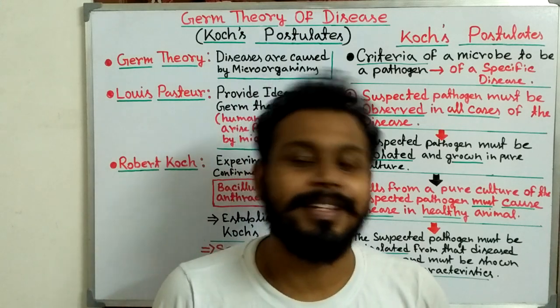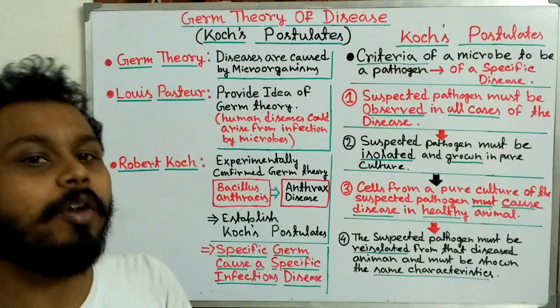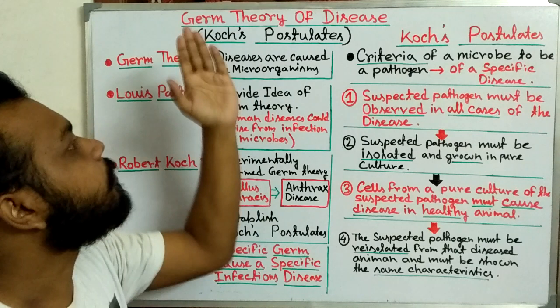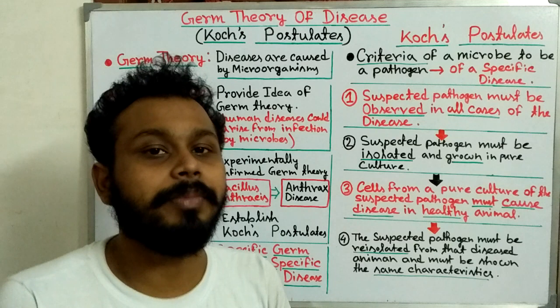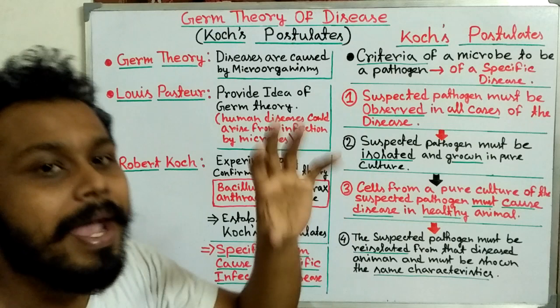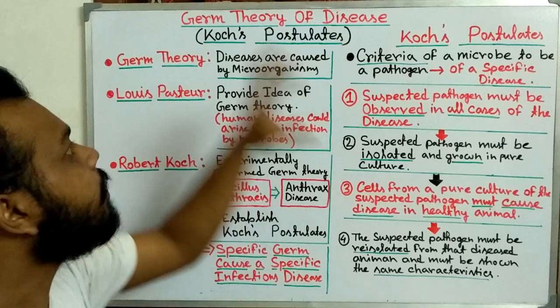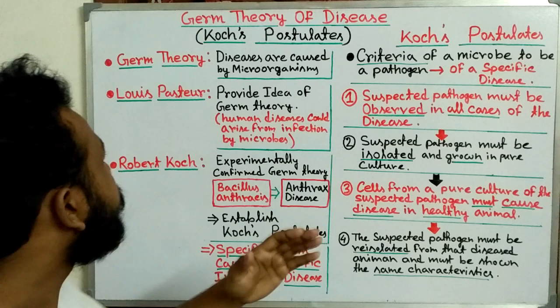Hello friends, today in this video we are going to discuss about the germ theory of disease, and also discuss about the main experimental approach of germ theory of disease, which is Koch's postulate. So first we have to know what is germ theory. The main idea is that a germ, or a pathogen, or a microorganism can cause a particular disease.